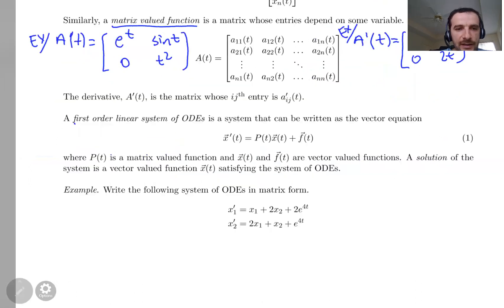Now, a first-order linear system of ODEs can be written as the vector equation. We are going to use matrices and vectors to rewrite a first-order linear system in this way. It is first-order, that's why the highest derivative is the first derivative. These are the derivatives. P(t) is a matrix-valued function, and x(t) and f(t) are vector-valued functions. Whenever we have such a system, we can talk about the solution of that system. The solutions are just vectors x(t) satisfying this system of ODEs.